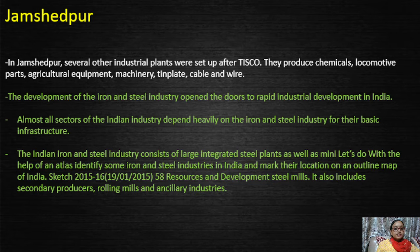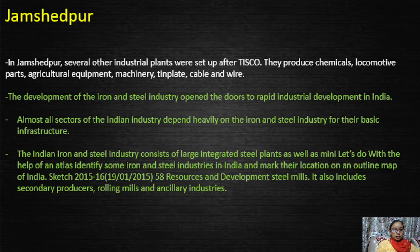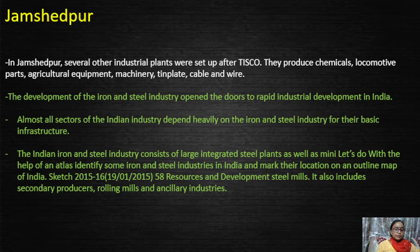Several other industry plants have come up around TISCO. They produce chemicals, locomotive parts, agricultural equipment, machinery, tin plate, cable, and wire.